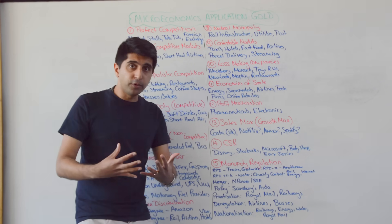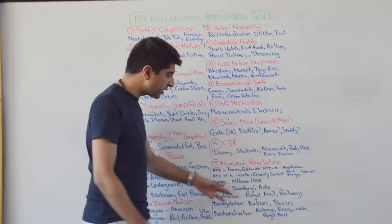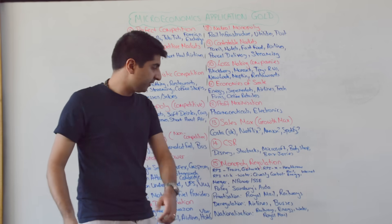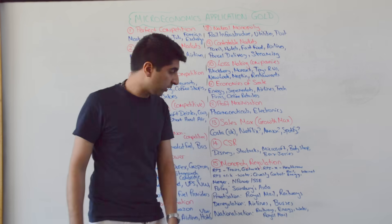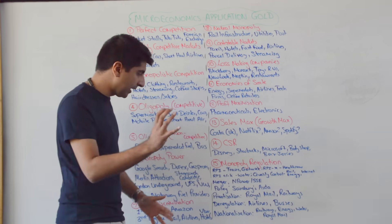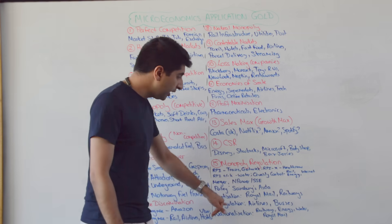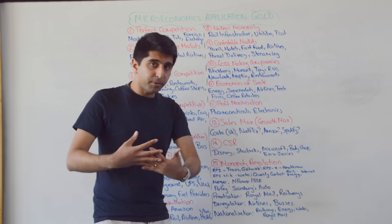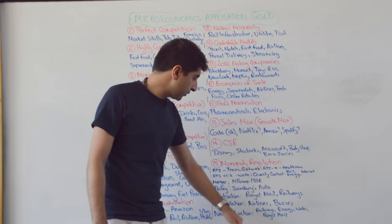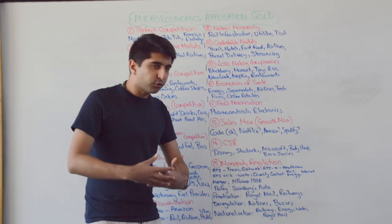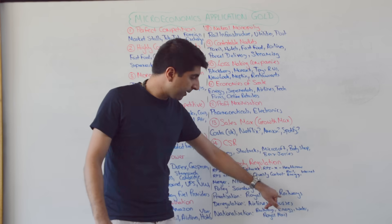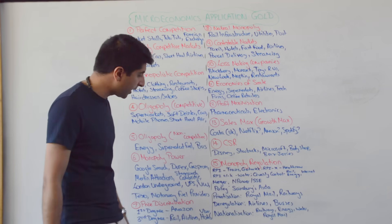Mergers: the recent merger of NPower and SSE being investigated by the CMA. Also the proposed merger of Sainsbury's and ASDA. Recent examples of privatization: Royal Mail in 2013, rail services in 1992. Deregulations: airlines in the early 1990s, buses in the 1970s.